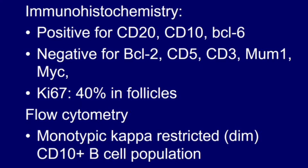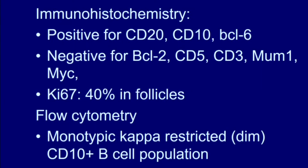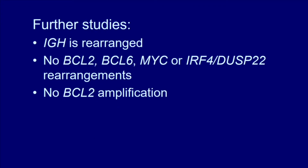In summary, immunohistochemistry showed that the cells were positive for CD20, CD10, and BCL6. They were negative or equivocal for BCL2, and they were negative for CD5, CD3, and MUM1. Ki67 was about 40% in the follicles. Flow cytometry showed a monotypic kappa-restricted B cell population that was CD10 positive. We also performed Ig heavy chain gene rearrangement studies, which confirmed a clonal Ig heavy chain rearrangement, confirming this is a monoclonal process.